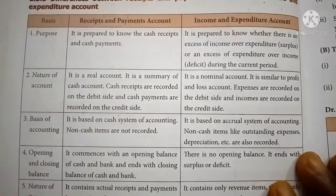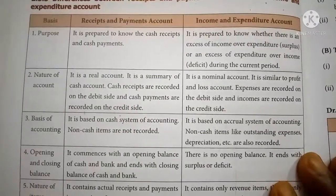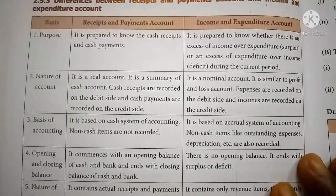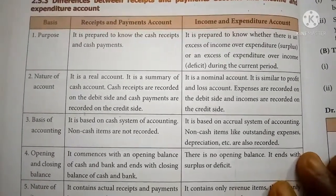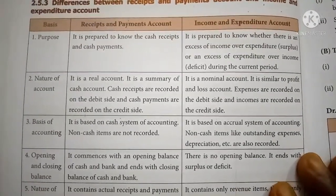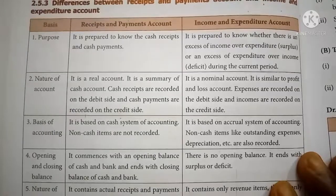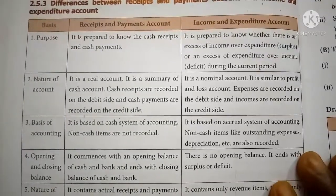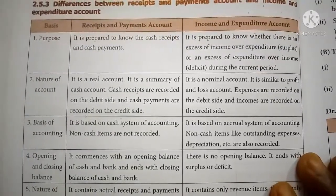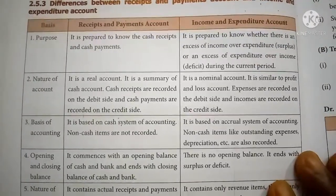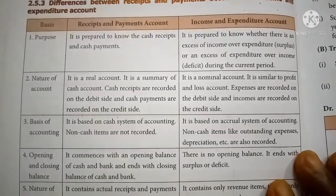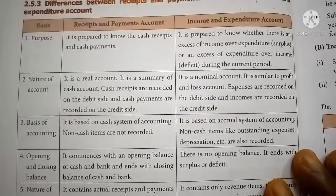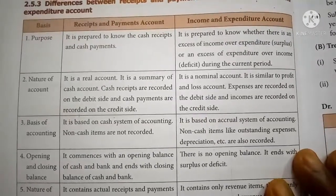Cash receipts are recorded on the debit side and cash payments are recorded on the credit side. So all cash receipts and cash payments are to be recorded in the Receipts and Payments account. In the case of the Income and Expenditure account,